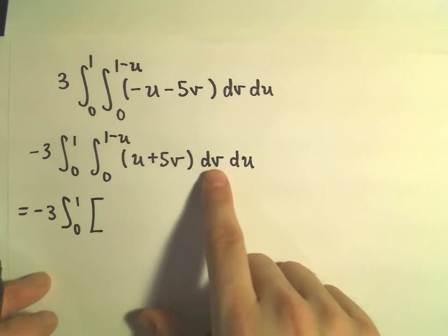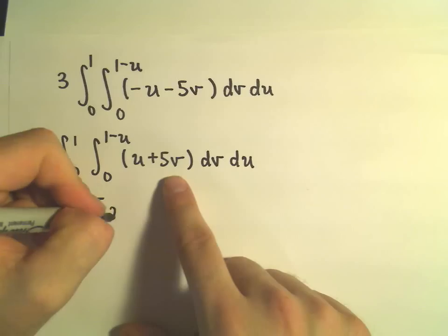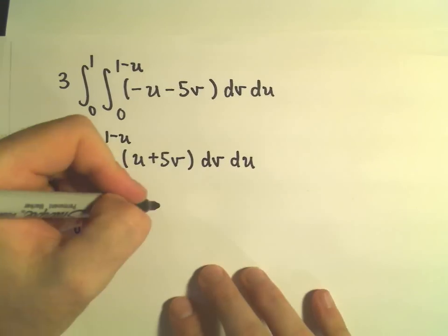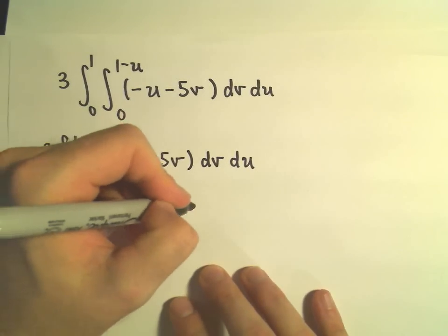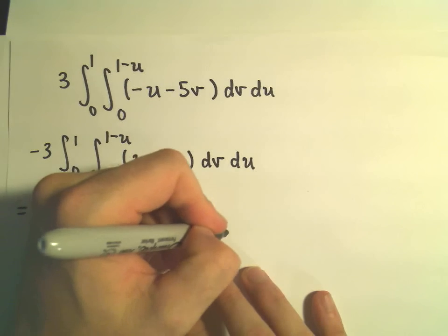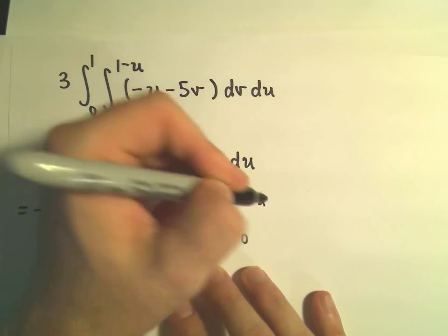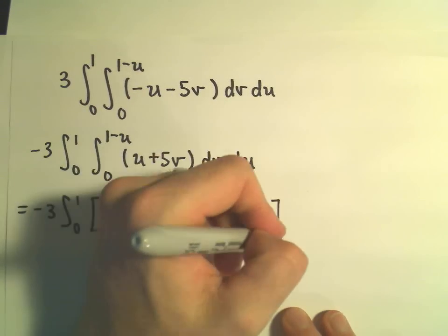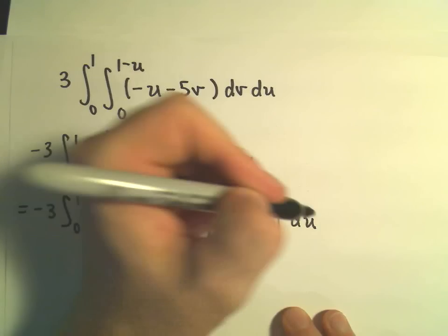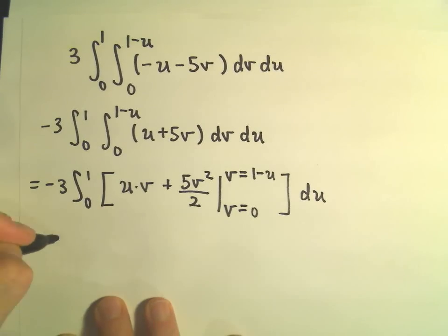So if we integrate with respect to v first, again I'm treating u as a constant, v as my variable. So I'll get u times v plus 5v squared over 2. And we have to plug in v equals zero and v equals 1 minus u and then integrate all of that with respect to u. So a little tedious here, but that's okay.